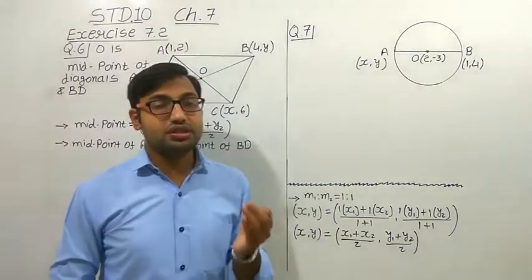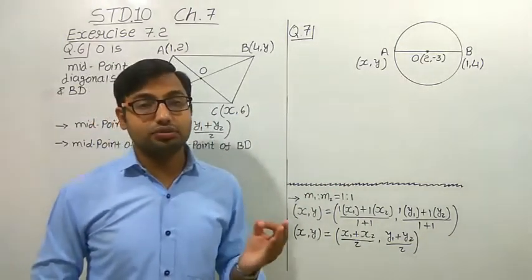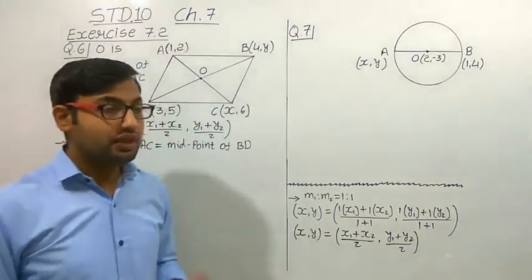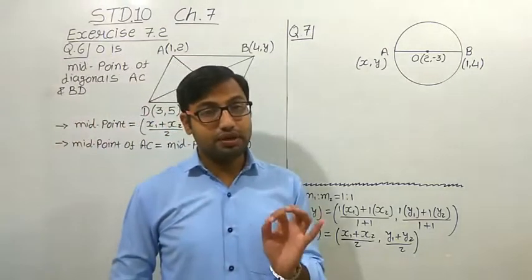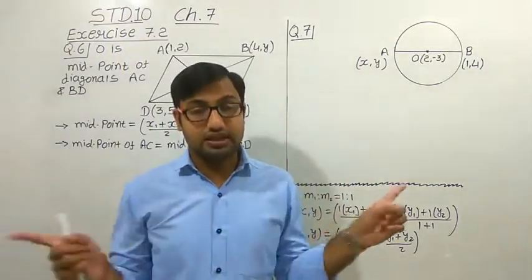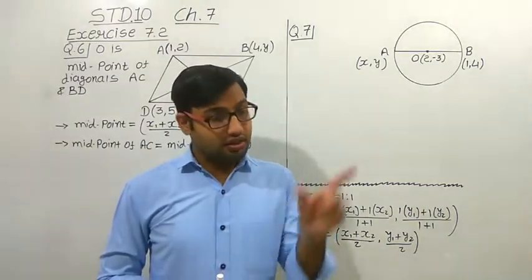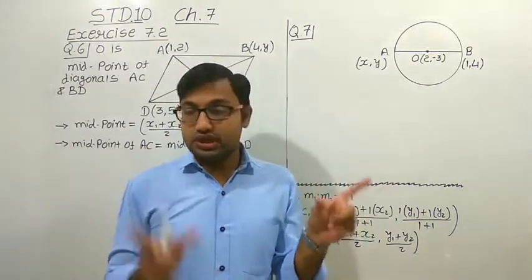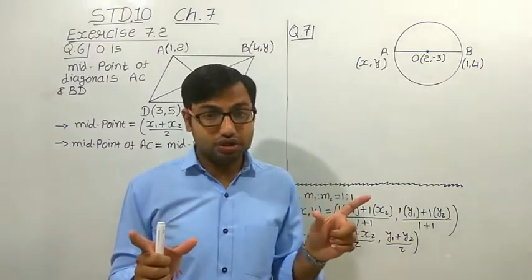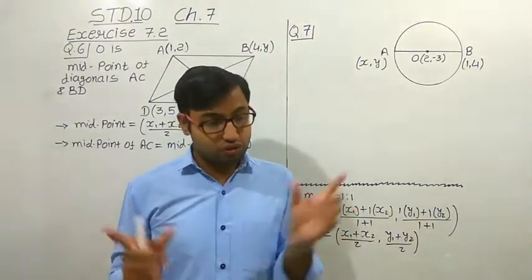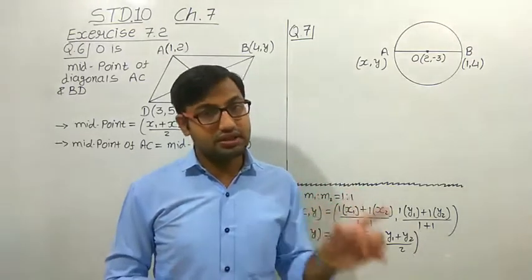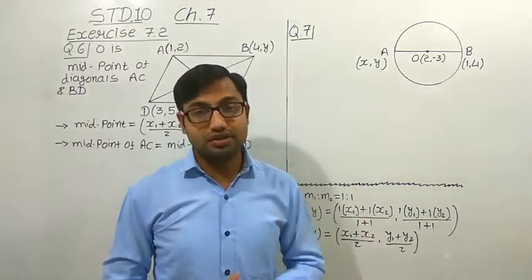Today we will discuss the special case of the midpoint formula. Now think: if the point which is in between the two points is the midpoint of the line segment, then the first portion and the second portion will have equal length. Because the point is the midpoint. If this portion is 5 cm, then the second one is also 5 cm.